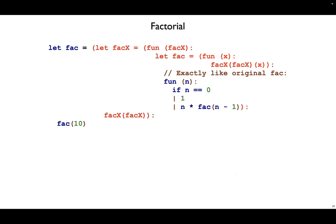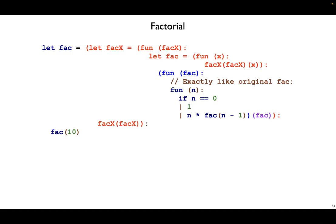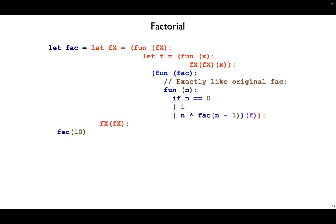Everything on the outside is now boilerplate and actually has nothing to do with factorial itself — we can make this work for any recursive function. So let's do one more bit of surgery. The fact-specific part is what's inside here, so let's do a `fun fact` to introduce that name. Now we can begin to rename on the outside: we have f for our self-applied function and fx for our accumulator that's going to make the f that we want.